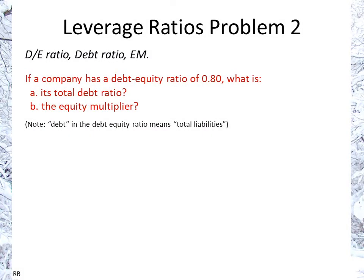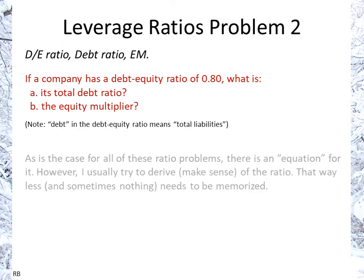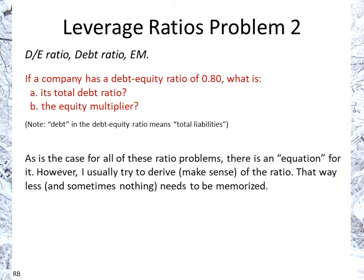Welcome to leverage ratios problem two. If a company has a debt-equity ratio of 0.8, what is its total debt ratio and what is the equity multiplier? Remember, debt in the debt-equity ratio means total liabilities, not just interest-bearing debt. As in the case of all these ratio problems, there is an equation, but I try to derive the ratio in a way that makes sense, so that less — and sometimes nothing — actually needs to be memorized.